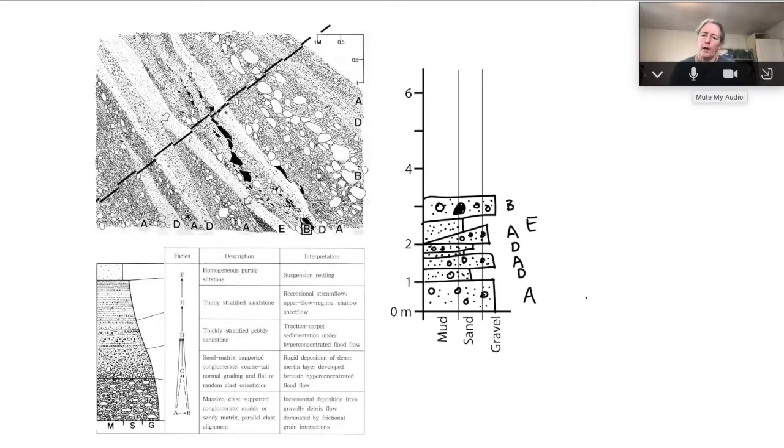So then from here I'm going to let you finish the second part of the stratigraphic column. One thing I am going to add to what I have already is that there's these arrows showing this place where this bed of facies A cuts out, and so I think that's probably an erosion surface.